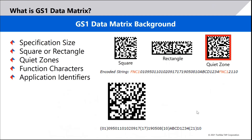In square form, the Data Matrix code can handle up to 2,335 alphanumeric characters, but with a GS1 application identifier or function code taking one character, you effectively have 2,334 alphanumeric characters. For numeric-only data you can encode 3,116 numeric characters. In rectangular form, you can encode up to 71 alphanumeric characters or 96 numeric characters, remembering that the function character at the start removes one character from the available count.